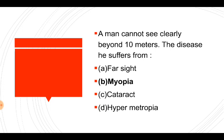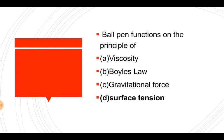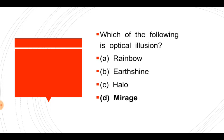Myopia is corrected by a concave lens. The ball pen functions on a principle — think of the ball pen. What is optical illusion?